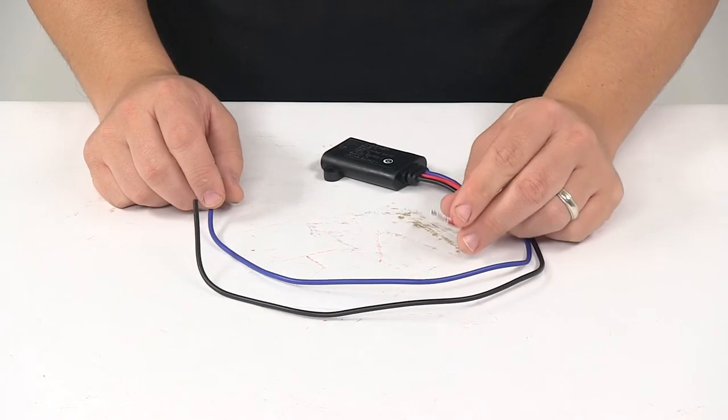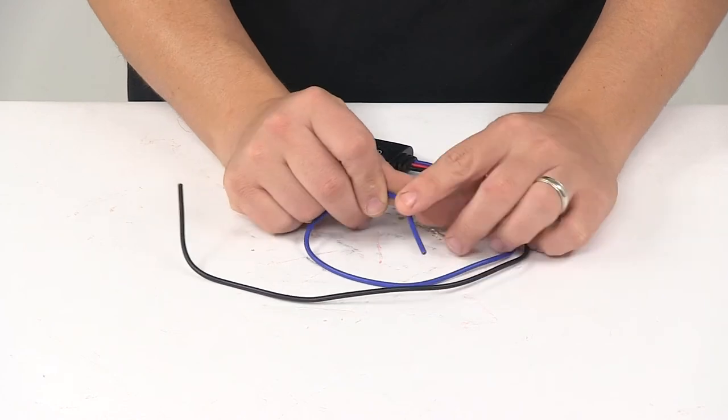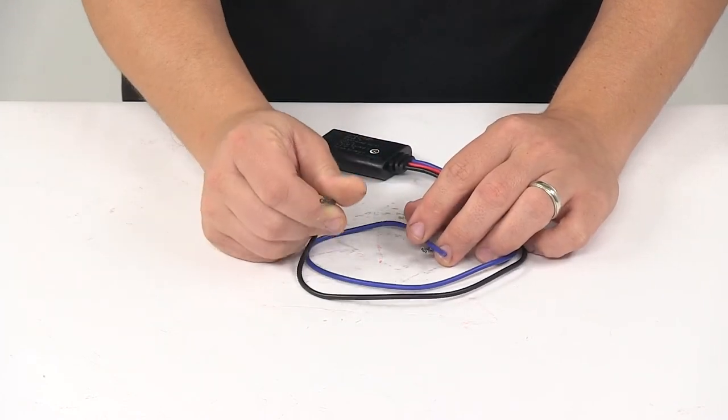And it's a three-wire design, so the red wire is for the breakaway battery, the blue wire is for the breakaway switch, and the black wire is for 12-volt power.